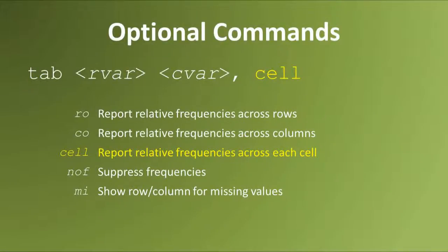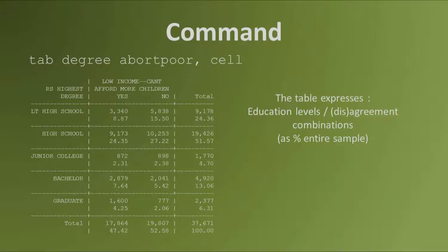The option cell asks Stata to report relative frequencies across each cell — in other words, it gives us the percentage of the entire sample represented in each individual cell. For example, this table says that about 4.25% of all survey respondents finished graduate school and support abortion for reasons of poverty, while only 2.06% finished graduate school and oppose it.